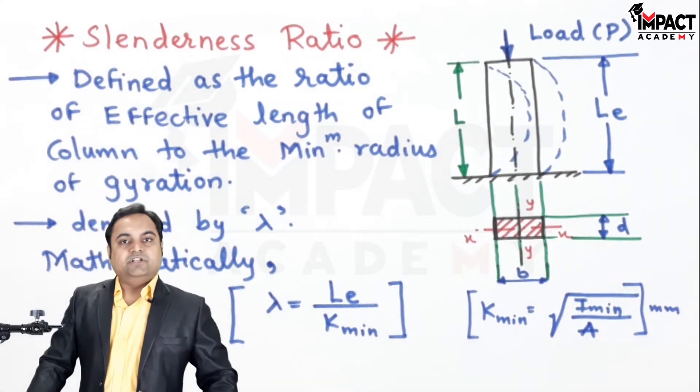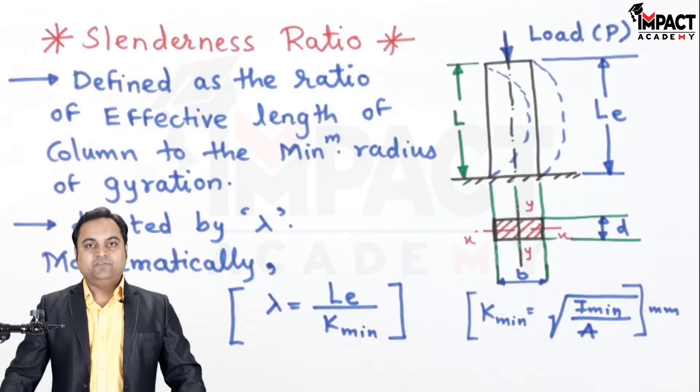So basically, slenderness ratio is the ratio of effective length of column to the minimum radius of gyration.